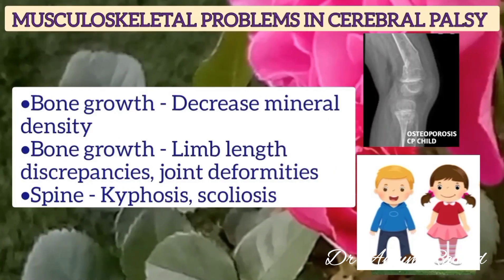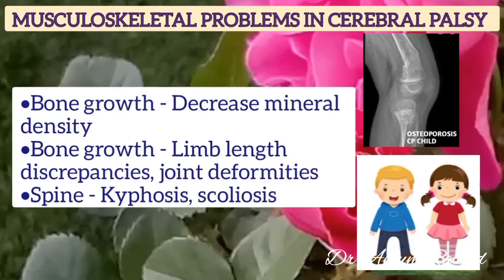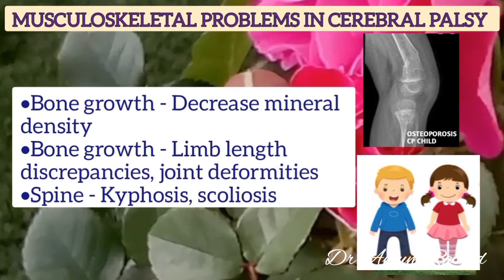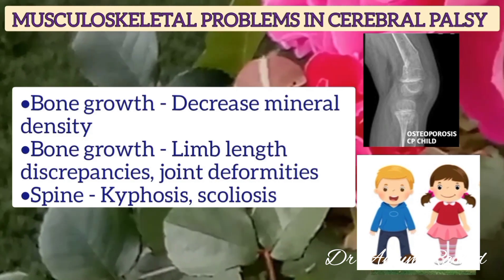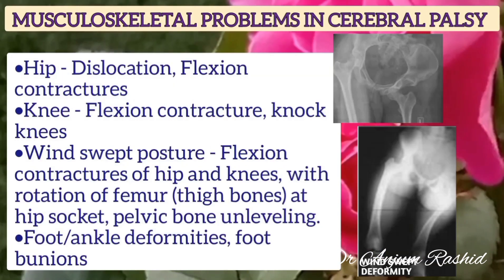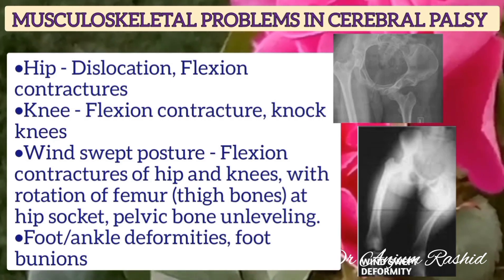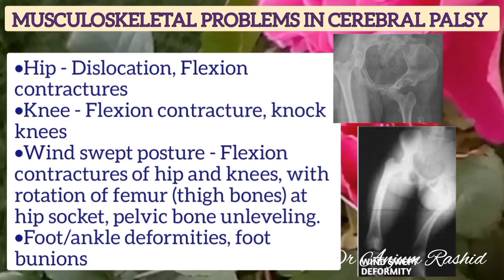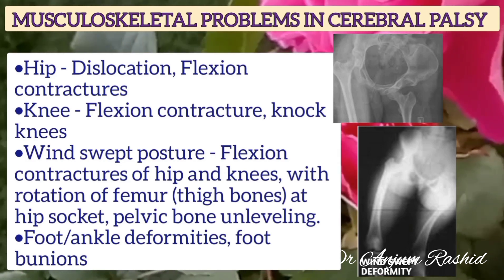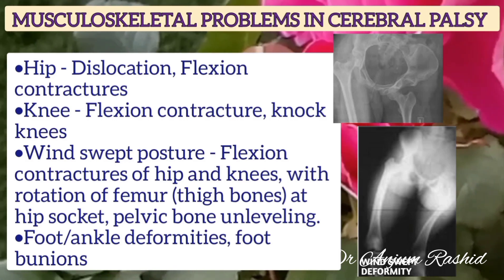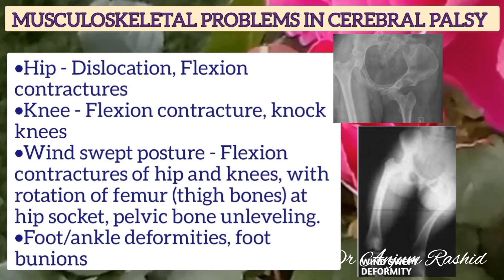Musculoskeletal problems in cerebral palsy include decreased bone mineral density, limb length discrepancies, joint deformities, and kyphoscoliosis. In the hips, there may be dislocation or flexion contractures; in the knees, flexion contractures and knock-knees. Wind-swept posture may be present — flexion contracture of hip and knees with rotation of the femur at the hip socket and unleveling of the pelvic bone. Foot and ankle deformities and foot bunions may also be present.